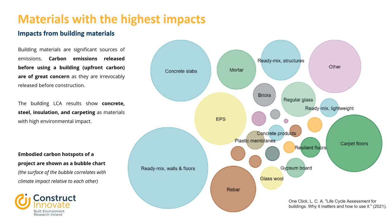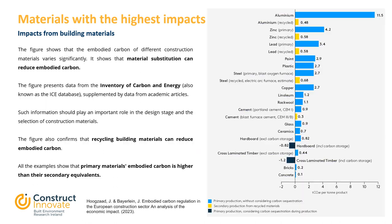Then carpet floors, EPS insulation, rebar, glass and bricks also contribute. The percentages can change depending on the topology of the building. Another study demonstrated that the embodied carbon of different construction materials varies significantly. The figure shows that material substitution can reduce embodied carbon. For example, aluminium has the highest impact if it is used as a primary production; however, it will be among the lowest if it is used as a recycled material. The figure presents data from the Inventory of Carbon and Energy, also known as the ICE database, supplemented by data from academic articles. Such information should play an important role in the design stage and the selection of construction materials.